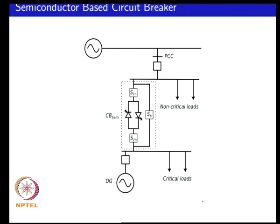Today what we will do is look at the smarts that go behind the operation of a switch, which would essentially be a relay or something that commands the switch to open or close. For DG applications this would typically be a relay which commands the switch to either connect or disconnect. The operation of the switch would be controlled by an external device.